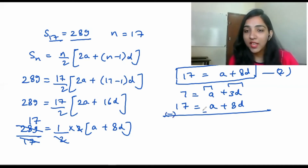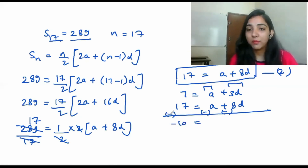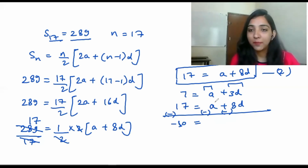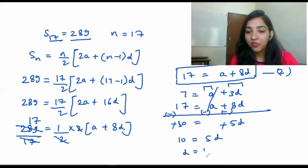Subtracting equation 1 from equation 2: a cancels out, 8d − 3d = 5d, and 17 − 7 = 10. So 5d = 10, giving d = 2.